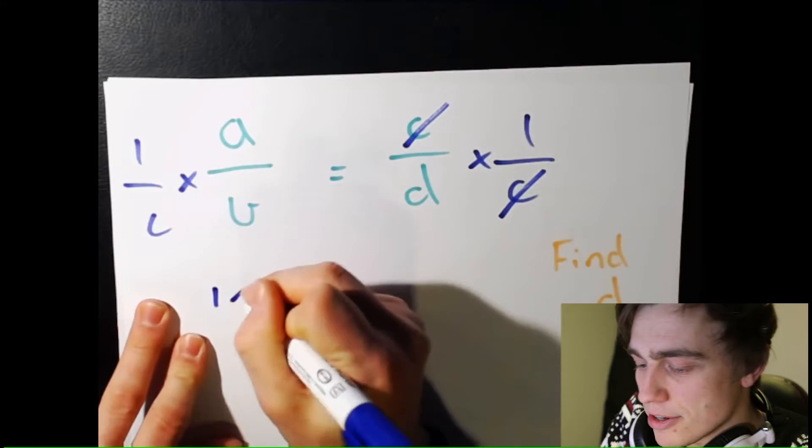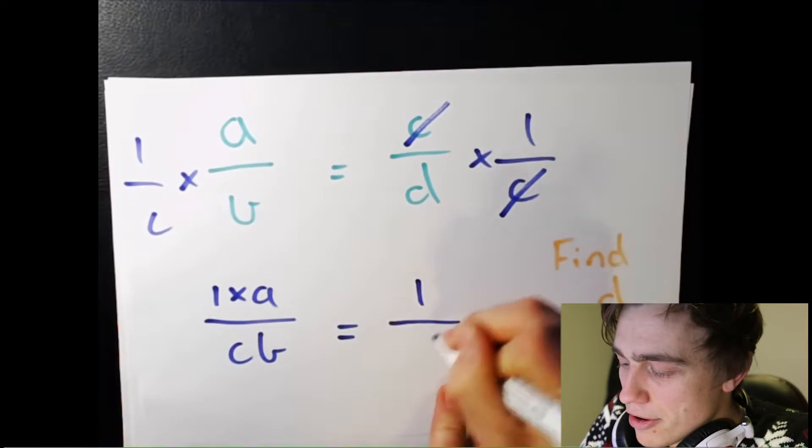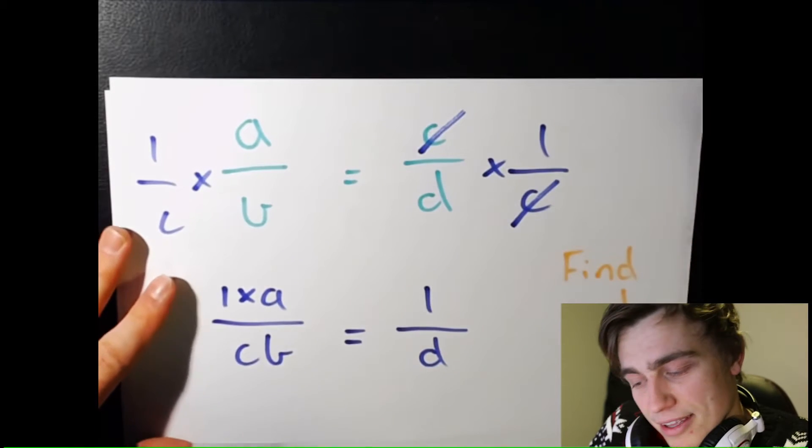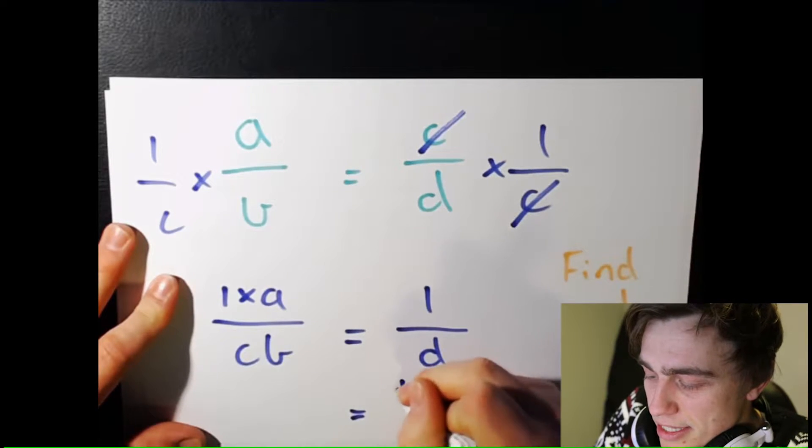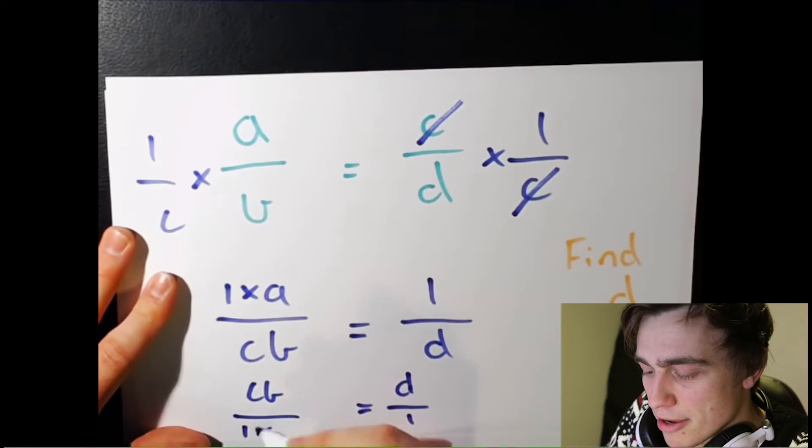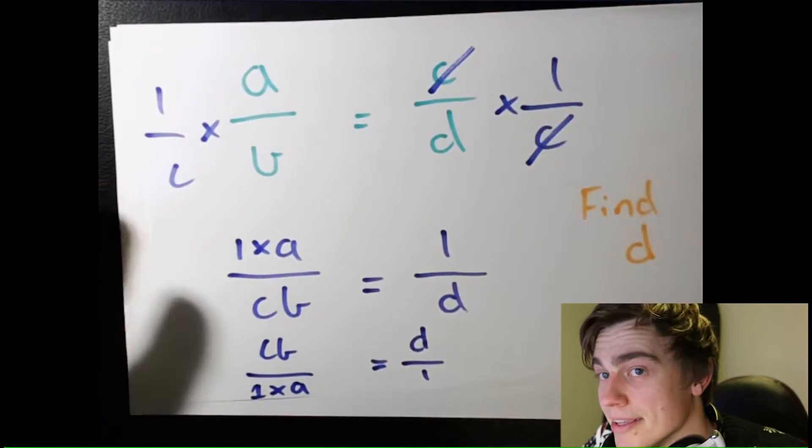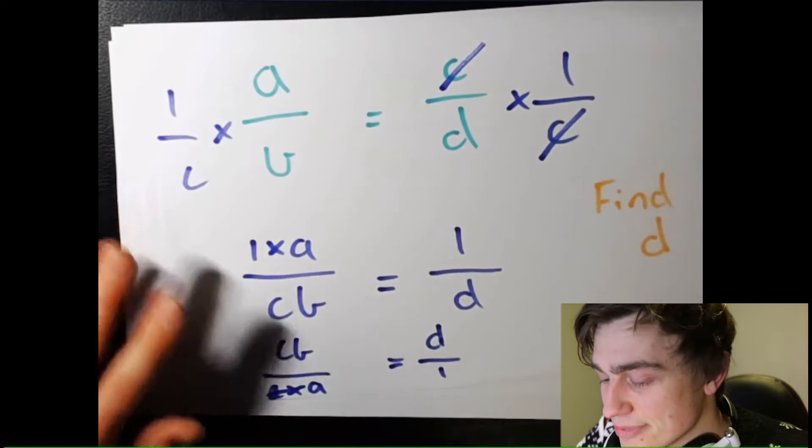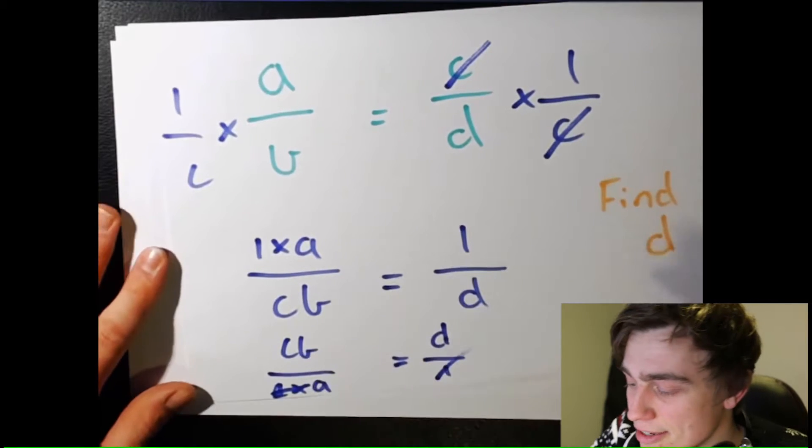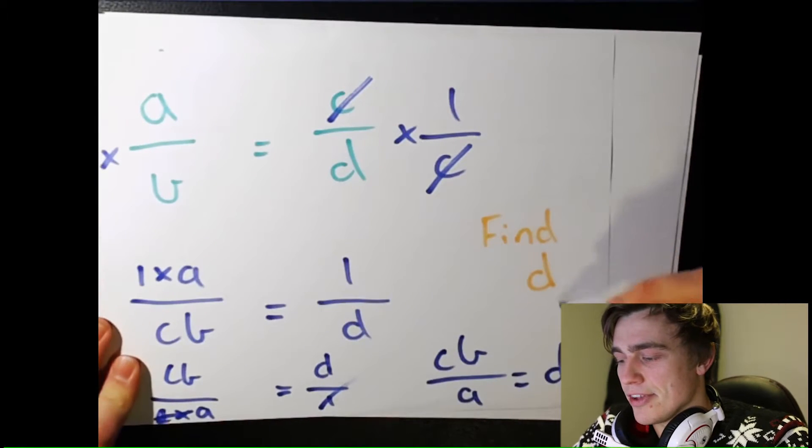I'm left with 1 times A equals C... I'll write it CB. And I'm left with the 1 over D. Again, the reciprocal. What are we going to do? Flip. Always flip. Rewrite it as D over 1 equals CB over 1 times A. 1 times that by A is going to be itself, so we can take that off. D divided by 1 is itself. So my answer is now... I'll write it here. CB over A equals D. Found D. Nice and easy.